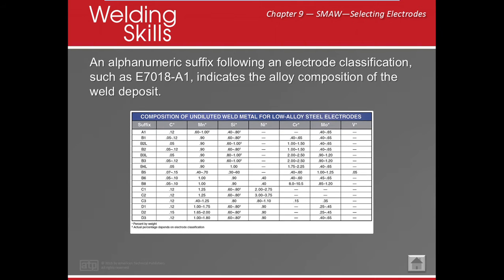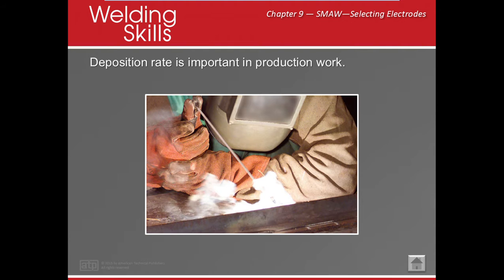After the electrode classification — like E7018-A1 — it tells us how much of each element is in it. A1 indicates 0.12% carbon, along with manganese, silicon, nickel, chromium, molybdenum, and vanadium. Rather than giving specific percentages, it's a shorthand that tells you the composition for that classification.